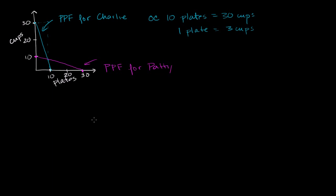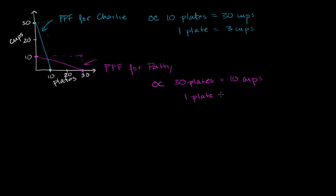Let's think about Patty's opportunity cost for producing a plate. If she was focused all on cups and wanted to produce 30 plates, she would have to give up 10 cups. So her opportunity cost of producing 30 plates is equal to 10 cups. If you divide both sides by 30, the opportunity cost of producing one plate is 10 divided by 30, which is one third of a cup.